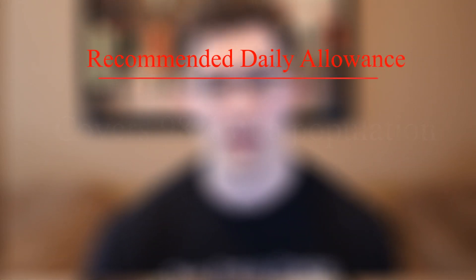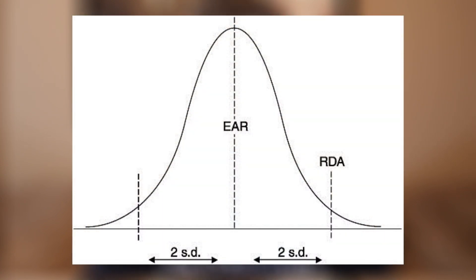The next dietary reference is probably the most popular one — the one that most people should be focusing on — and that's the Recommended Daily Allowance, also interchangeably called the Recommended Daily Intake, RDI or RDA. This one is actually based on the EAR: once we figure out our Estimated Average Requirement, we statistically move over two standard deviations, which ends up covering about 98% of a particular population. That 98% is a much better percentage than the EAR's 50%, so you have a 98% chance of being covered under the RDA.